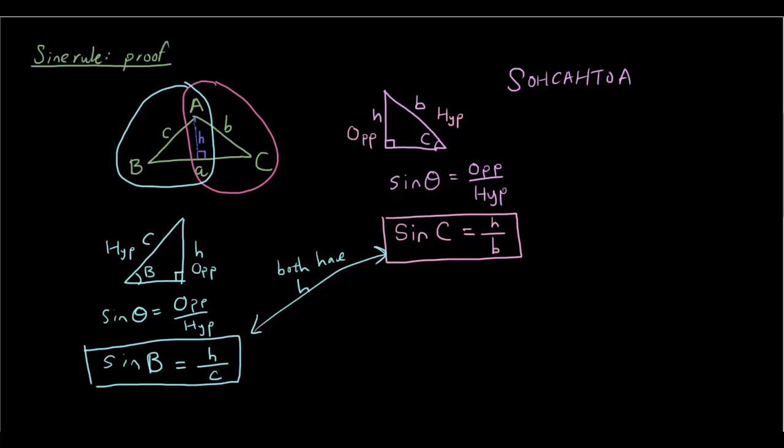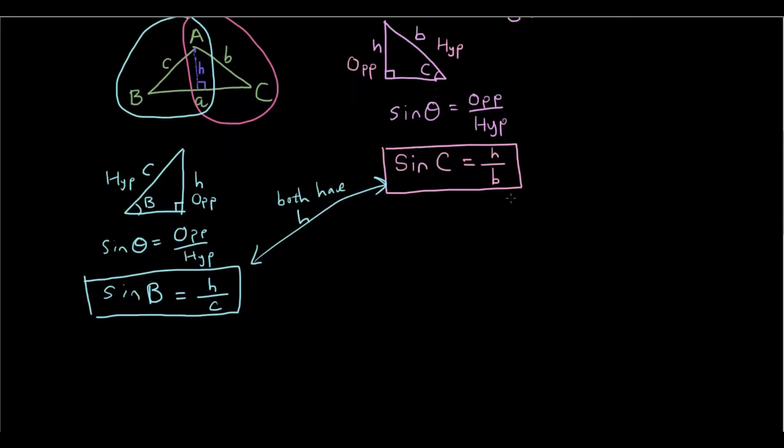So I'm going to rearrange both equations to make H the subject. So using simple algebra, H is equal to sin C times B, and here H equals sin B times C. And since this H is equal to this H, since they all belong to the same triangle, sin C times B is therefore equal to sin B times C, since this H is equal to that H.